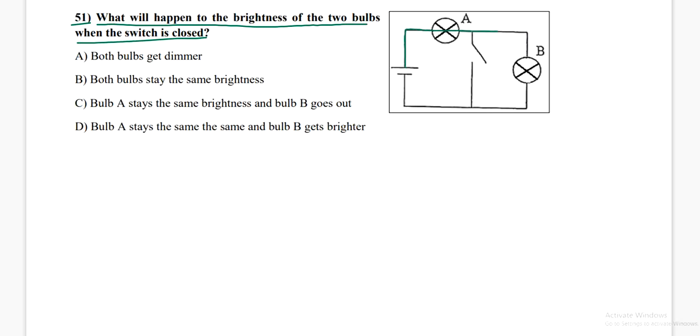...are connected in series. Because as you can see, the green line here represents the path of the electric current. This is the current. So the same current goes into A and B. This is before the switch is closed.